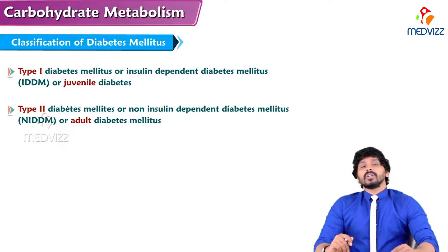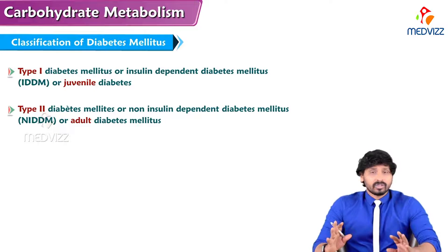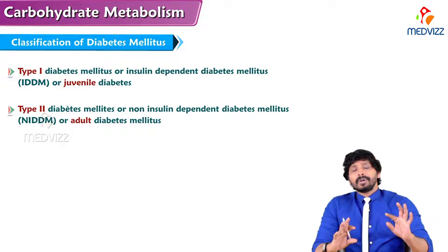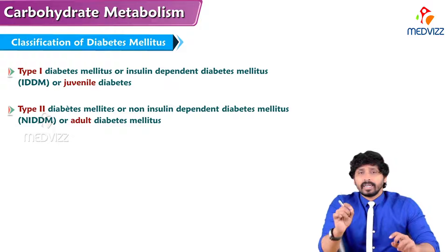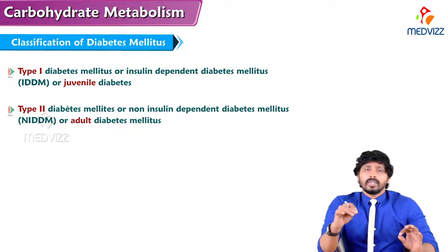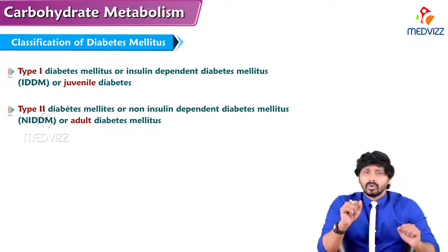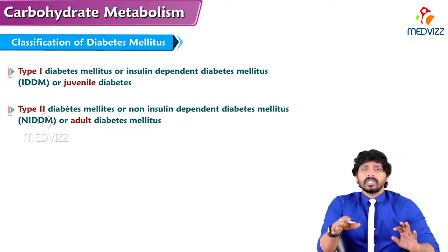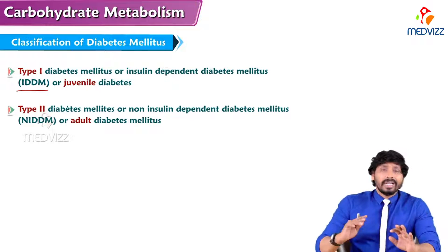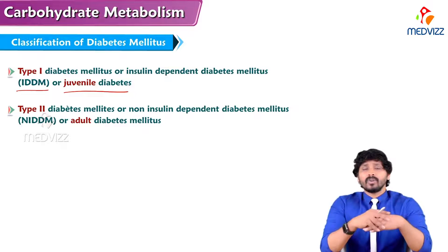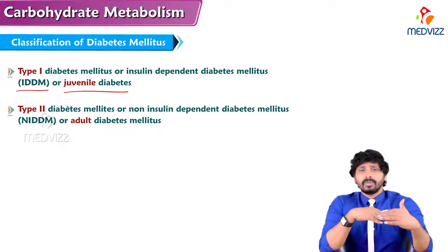Now, classification. Diabetes mellitus is classified based on conditions: Type 1 and Type 2. Type 1 diabetes mellitus is otherwise known as insulin-dependent diabetes mellitus (IDDM). In this condition there is no production of insulin from the pancreas — nil or absent insulin. The pancreas cannot produce insulin, so people with this type are totally dependent on exogenous insulin. It is also known as juvenile diabetes because it has early onset, from the teenage level.